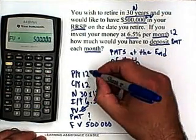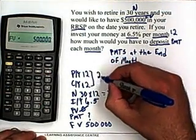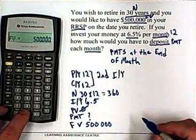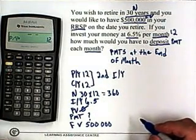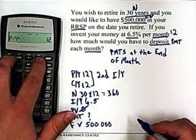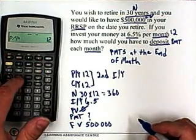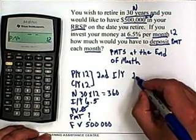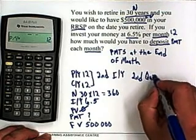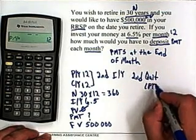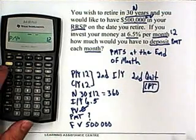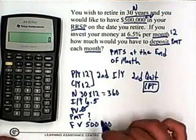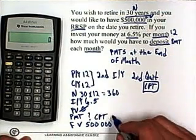For PY and CY, you have to go second function IY to get into it. So second IY — mine's already set at 12. If yours is not set at 12, make sure to type in 12 and hit enter. Once you're done, you can go second quit — quit is above the CPT. Then we just want to compute payments, so we go CPT PMT.